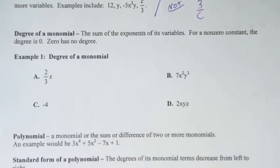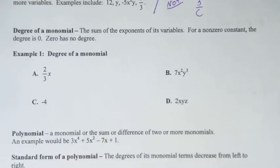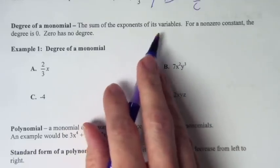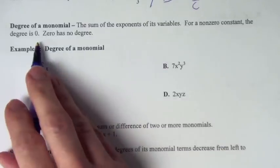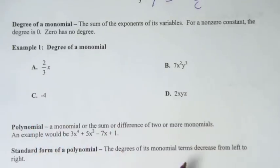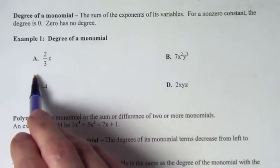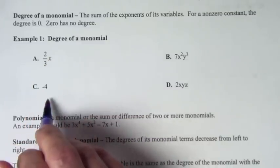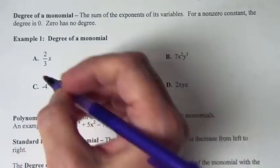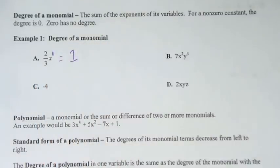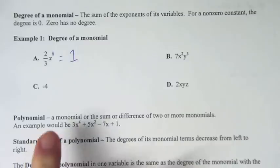We can also talk about the degree of a monomial. The degree of a monomial is the sum of the exponents of its variables. For a non-zero constant, the degree is 0. So what is the variable in this monomial? X. What is the exponent on that x? 1. When there's no exponent written, it's 1. So we add up all the exponents — we have a sum of 1 — and the degree of that monomial is 1.